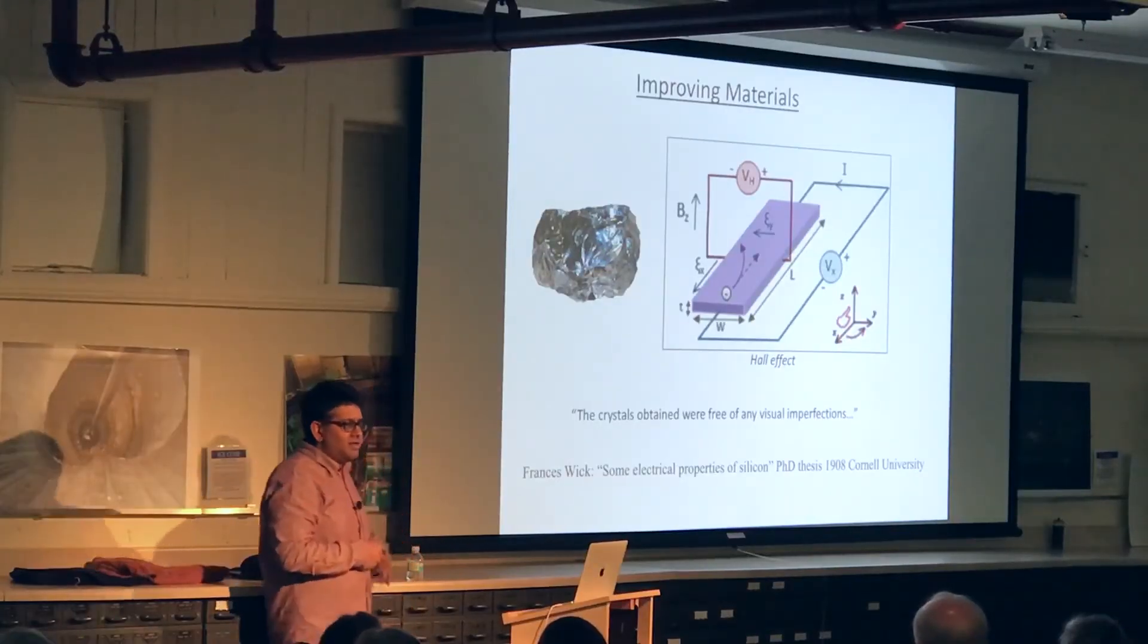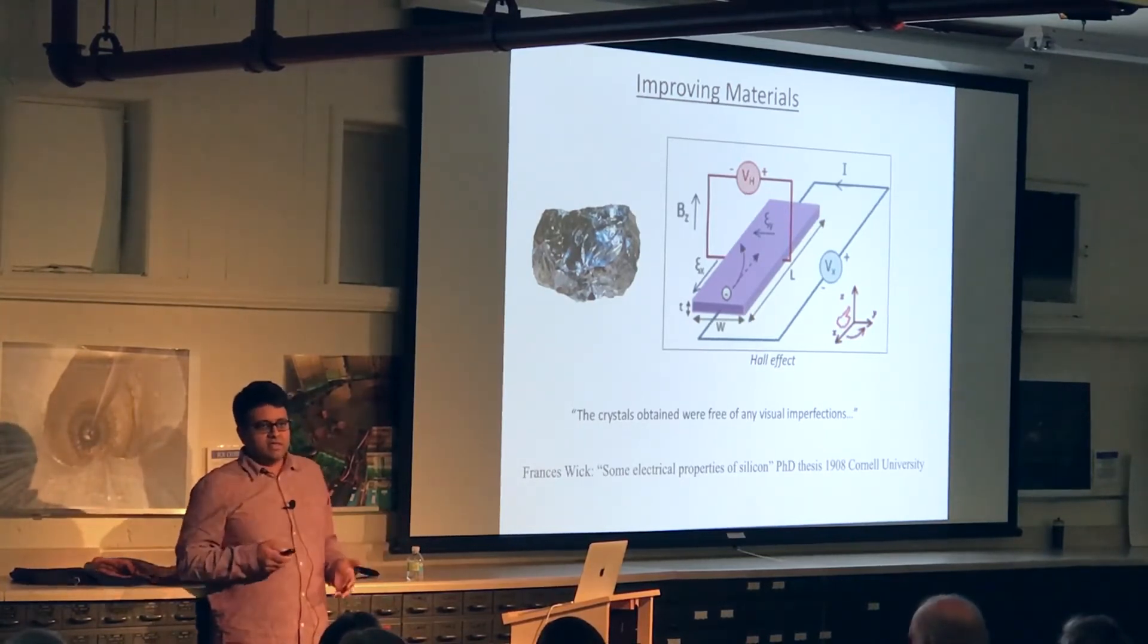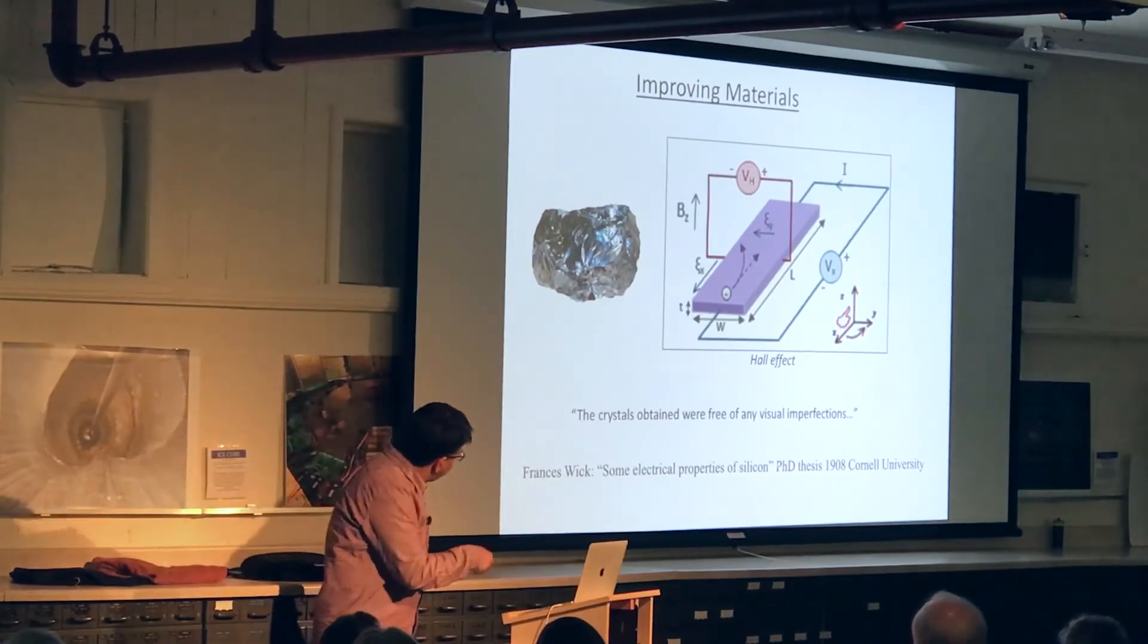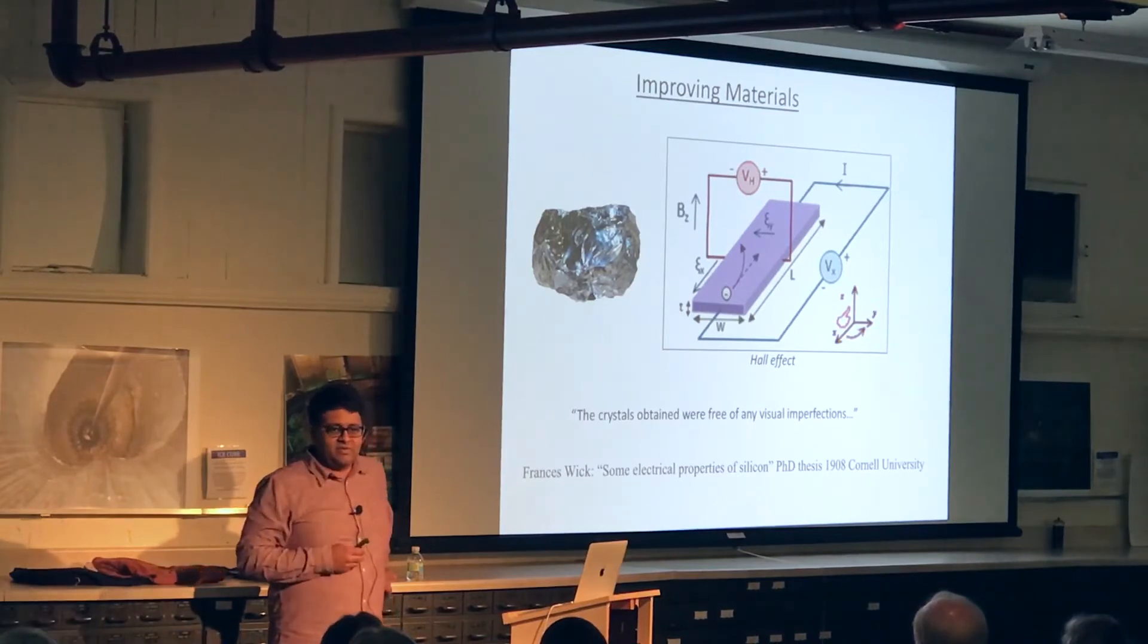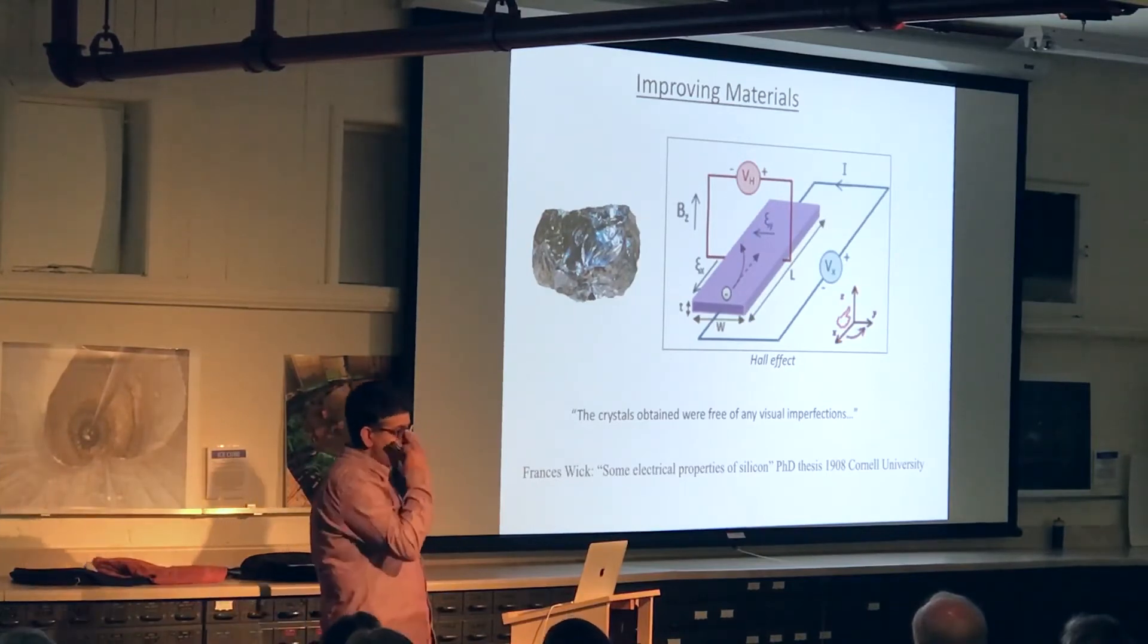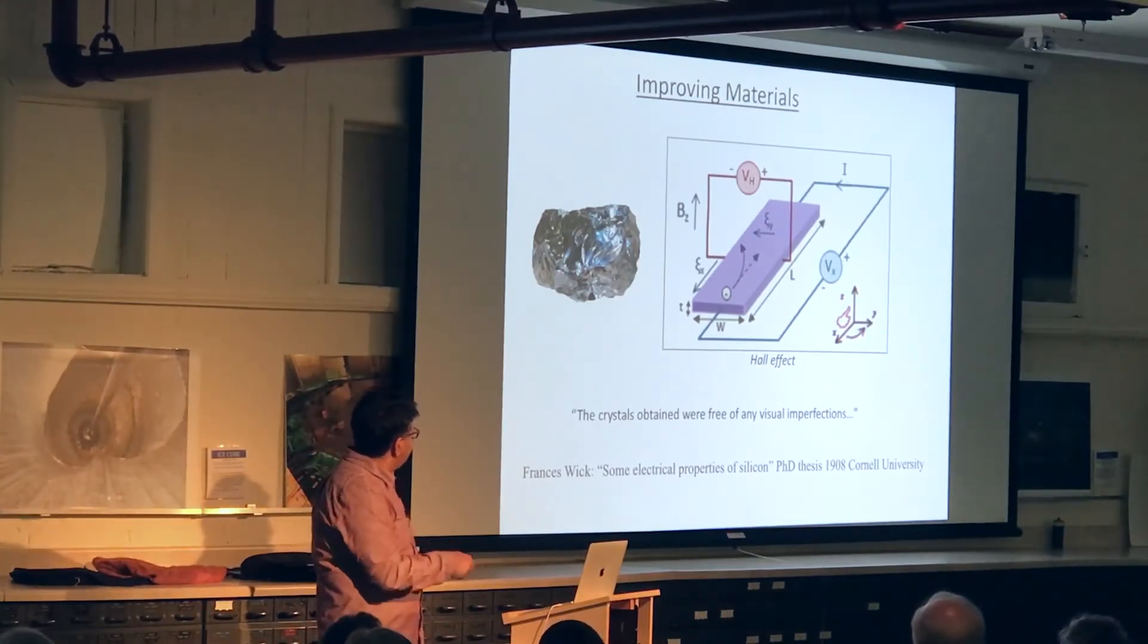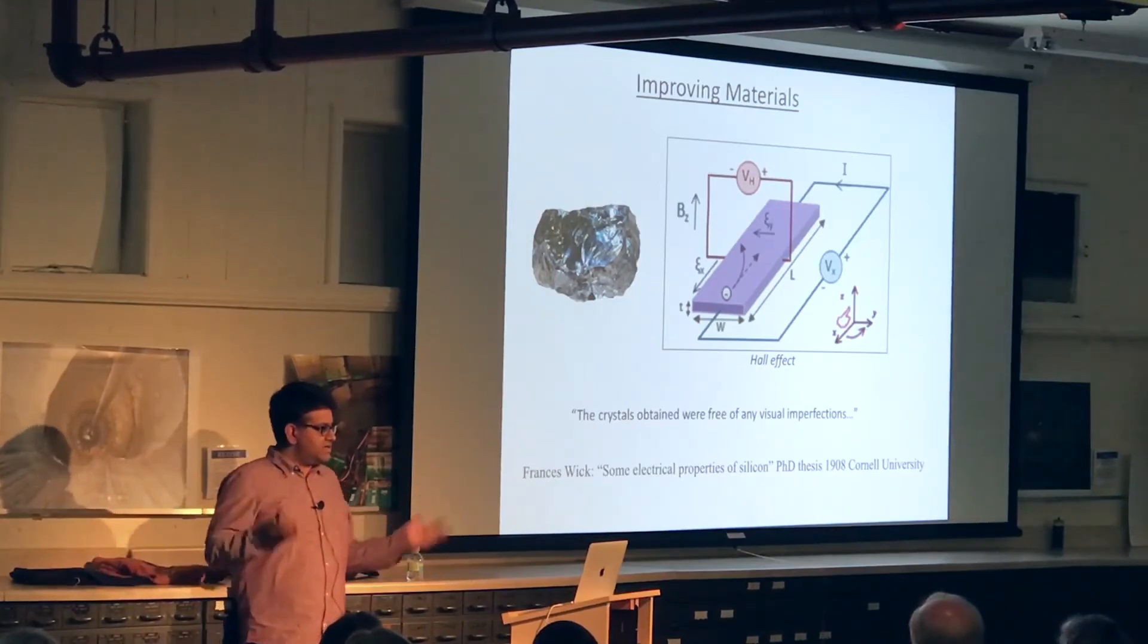So I started to read about what Miss Wick had done. And what Miss Wick had done was she had measured properties of silicon, silicon that was available as of 1908. And so in her thesis, another wonderful thing in this thesis was that it had absolutely no illustrations whatsoever. And this sounded great to me because I didn't know how to use the computer really and the whole business of illustrations just terrified me. So I read the thesis and it said about the crystals—this is not her crystal, I got this from Wikipedia. It said that the silicon crystals that were obtained were free of any visual imperfections. So in those days, that's the way they decided whether a crystal was good or a crystal was not good. They looked at it and they said it looks good.